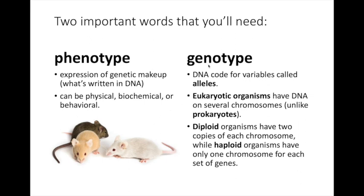The genotype is the basis for the phenotypes. The genotype refers to the DNA code. In eukaryotic organisms, we have our DNA on many different chromosomes. Prokaryotes like bacteria and archaea have one circular chromosome. If we have two copies of each chromosome, like we do, we are called diploid. And if we have two copies of the chromosome, each of those copies is called an allele. Haploid organisms have only one chromosome for each set of genes.